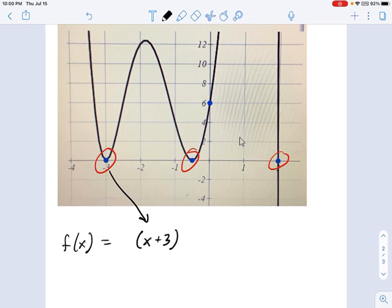x equals -3 came from a factor of x+3. x equals -1/2 came from a factor of x+1/2. And this factor over here at positive 2 came from x-2.